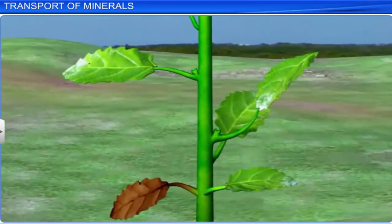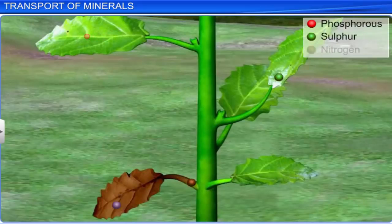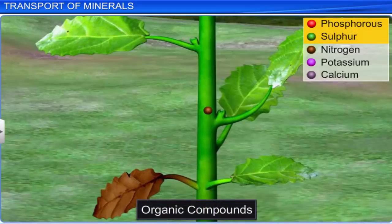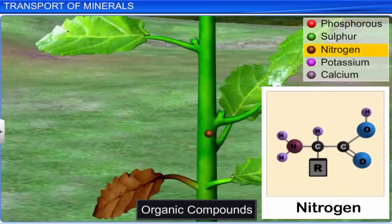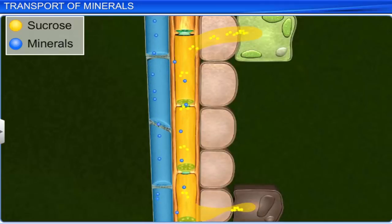For example, minerals from old dying leaves of deciduous plants are exported to other parts like young leaves before the leaves fall. Phosphorus, sulphur, nitrogen, and potassium are readily mobilized as inorganic ions. While some elements such as calcium, that are structural components, cannot be remobilized. Small amounts of phosphorus and sulphur are also carried as organic compounds. However, most of the nitrogen is carried as organic compounds in the form of amino acids. Moreover, the xylem and phloem exchange small amounts of the materials they carry. Both xylem and phloem elements are responsible for the transport of minerals in plants.